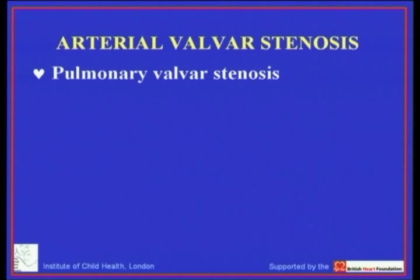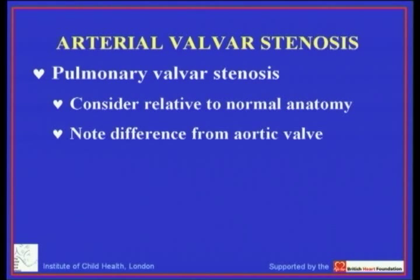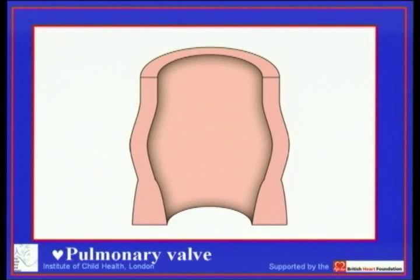Arterial valve stenosis. We're going to start with pulmonary valve stenosis and show how we can understand valve stenosis on the basis of the normal anatomy we discussed almost three days ago. Then we'll move on to the aortic valve, noting the differences, but again using the same concept to describe the analogy of valve stenosis.